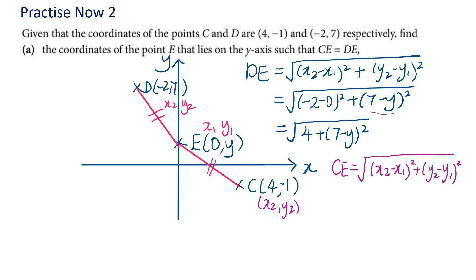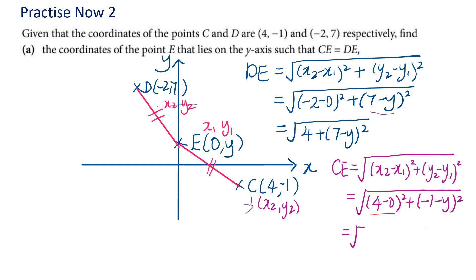Next, find the distance CE. You've already labeled E as (x1, y1), so label C as (x2, y2). Substitute the values into the formula. Using the calculator, CE = √(16 + (−1 − y)²).